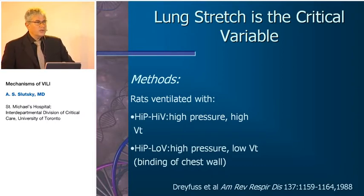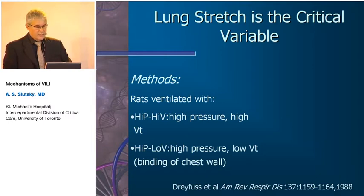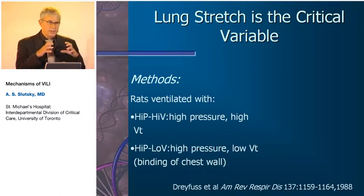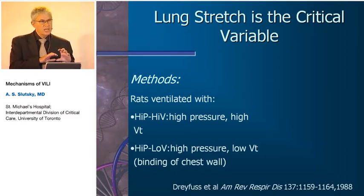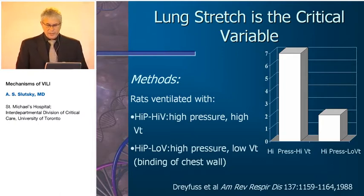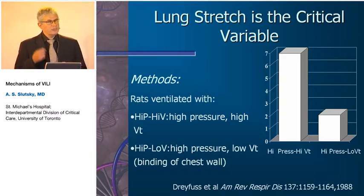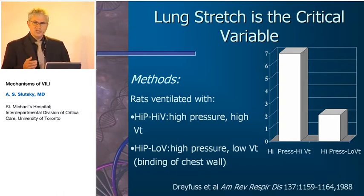Didier Dreyfus and colleagues coined the term 'volutrauma' and demonstrated that lung stretch — not pressure per se at the airway opening — was the critical variable. They ventilated rats with high pressure and high volume, or high pressure with low volume by placing a band around the chest, reducing tidal volume despite high airway pressures. High pressure with high tidal volume caused a significant increase in wet-to-dry weight ratio — edematous lungs. High pressure with low tidal volume did not. This showed it's not pressure per se but lung stretch and tidal volume that's important.